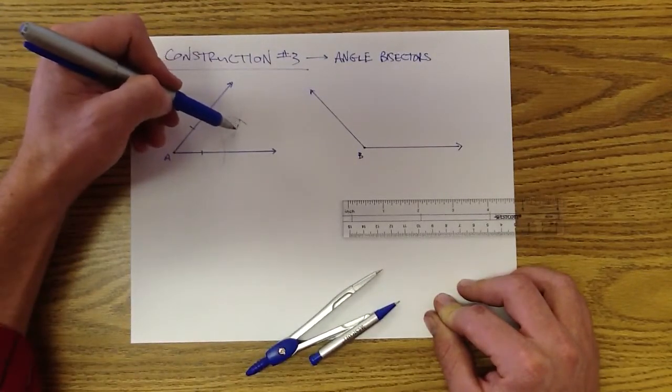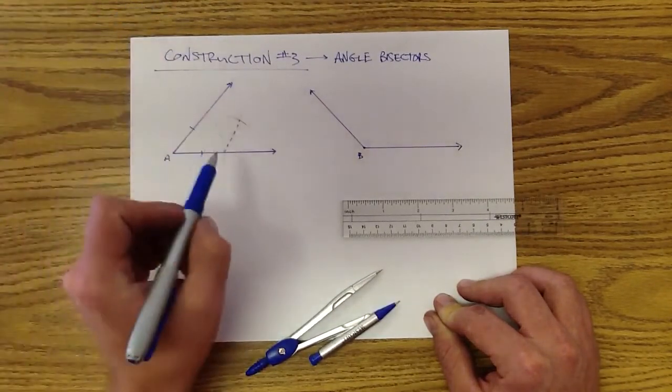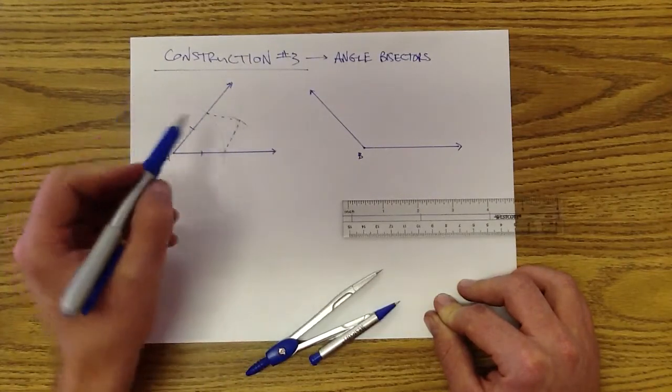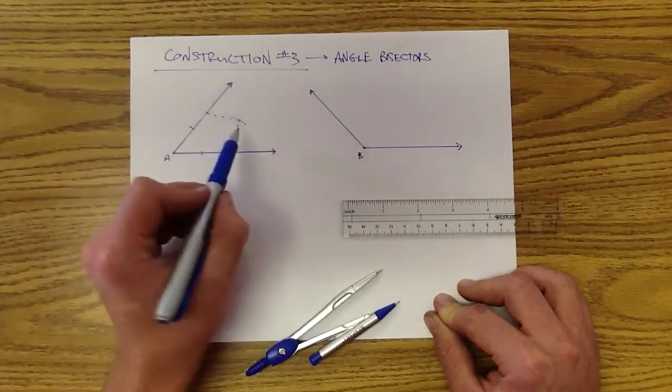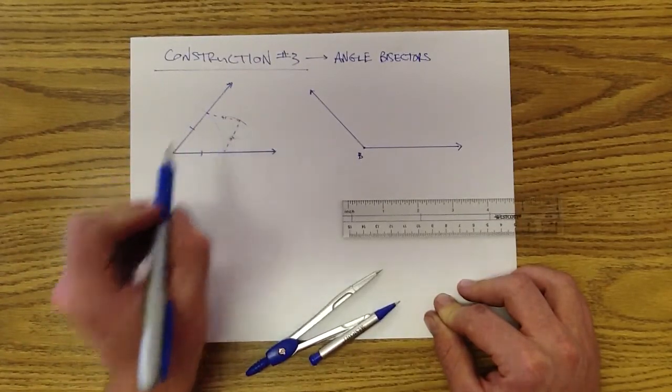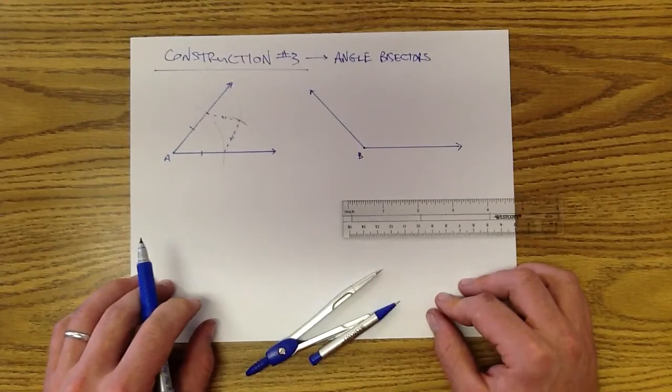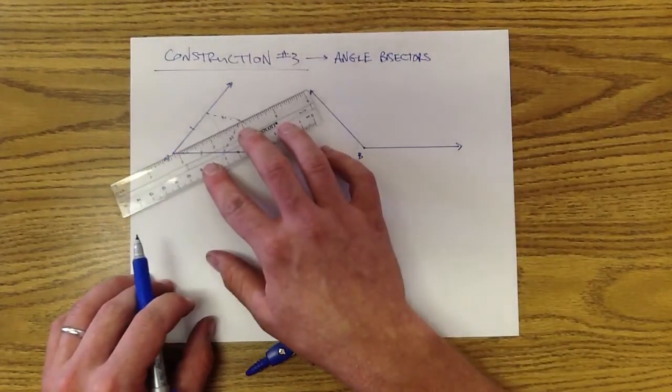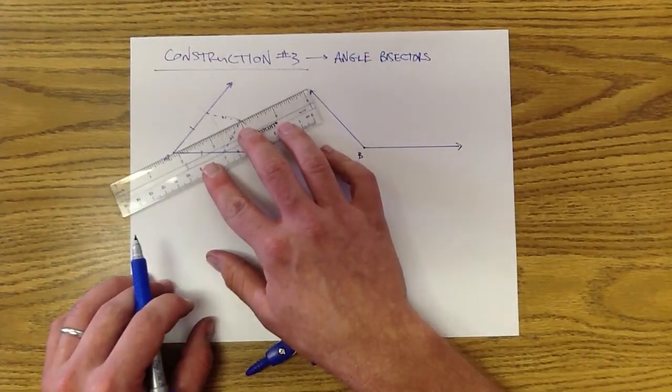if we drew a dotted line from that point to that point and the same thing up here, we struck an arc going this way and this way using the same distance. So these segments also are going to be congruent to each other. So what we're basically doing is setting up two congruent triangles.